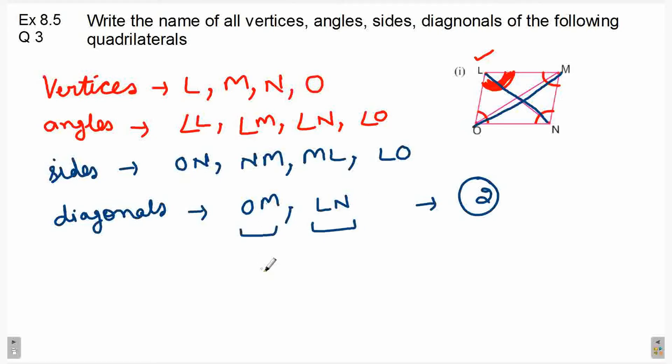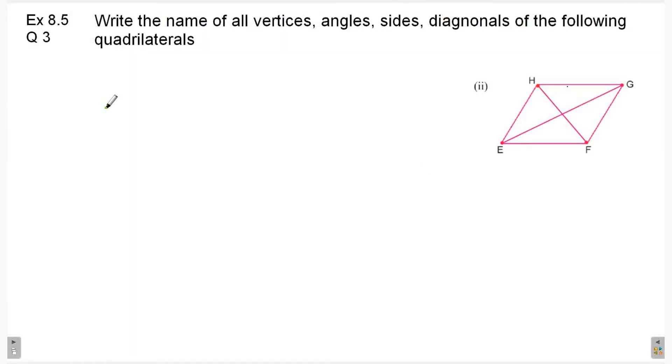Part 2. Given quadrilateral EFGH. So, first vertices. Vertices are E, F, G, and H. So, what happens in vertices? The edges, the sides, they meet each other. Next, let's write the angles.